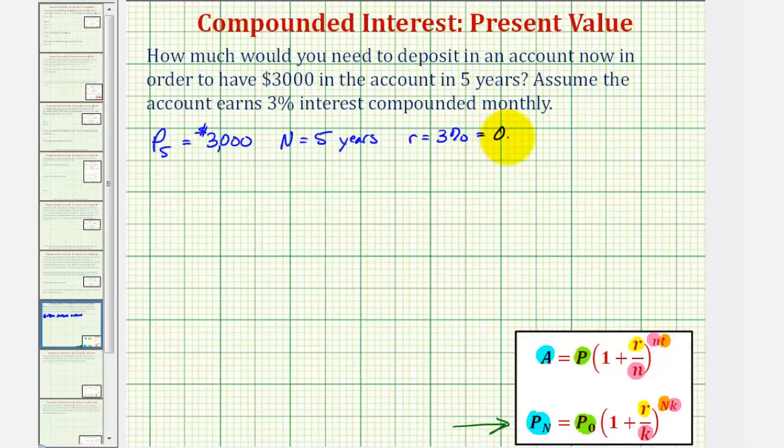As a decimal, this would be 0.03. Since the interest is compounded monthly, K, the number of compounds, is equal to 12. We want to find the initial deposit or the present value which would be P sub zero.